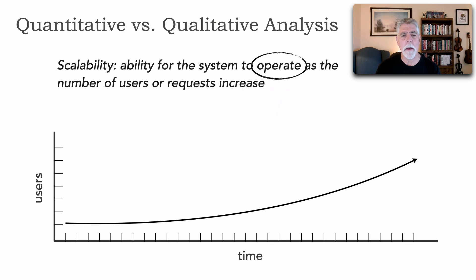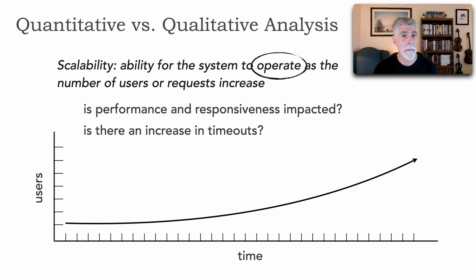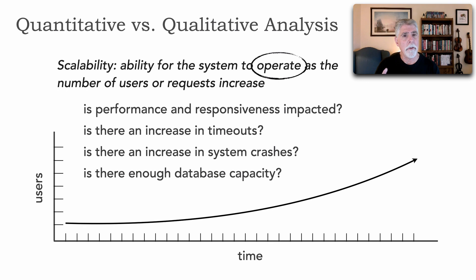For example, with scalability we can measure and see if the performance and responsiveness are impacted as our users grow. Is there an increase in timeouts perhaps, or maybe an increase in system crashes? Is there enough database capacity for the projected growth or the growth we're experiencing with increased requests or users? And is there enough virtual machine capacity in terms of threads, memory, and CPU? All of these are factors that determine whether a system is scalable or not.